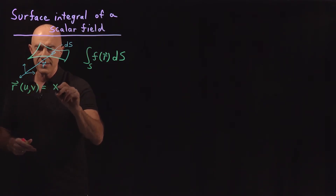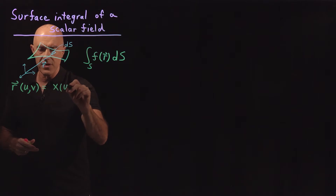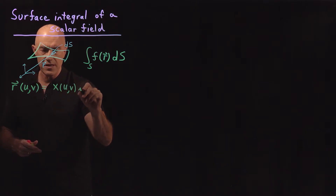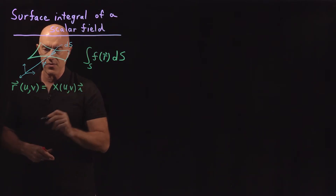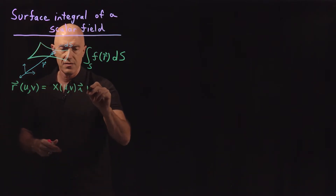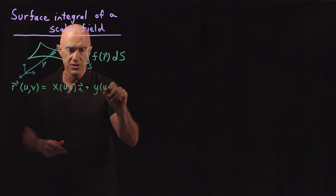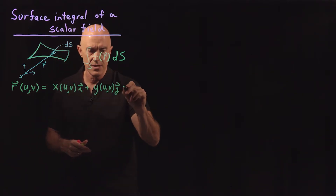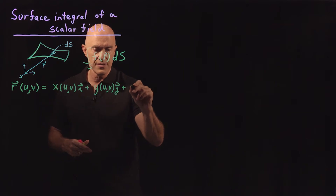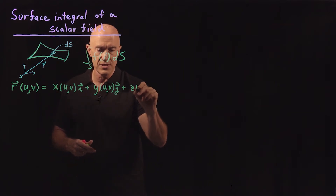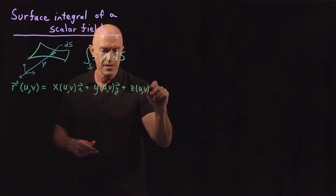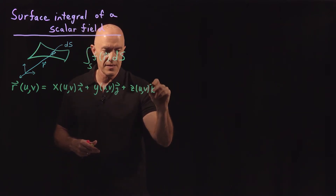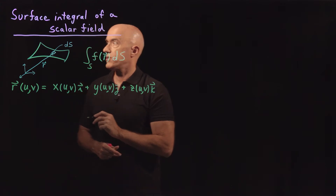That will be x, which will be a function of u and v in the i direction, plus y, which is a function of u and v in the j direction, plus z, which is a function of u and v in the k direction.